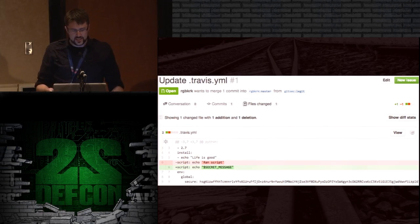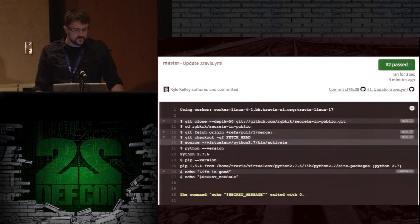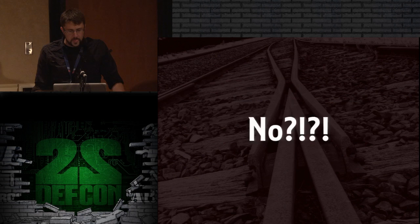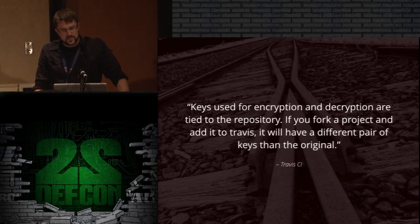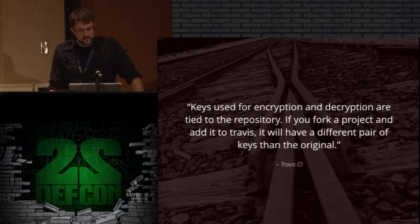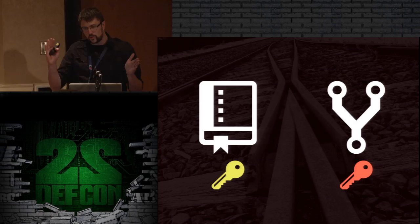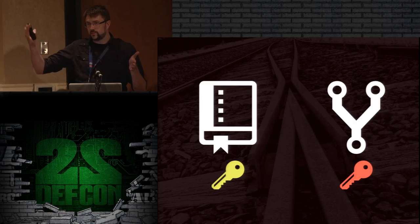Let's say we open a pull request and try to echo out their environment variable — nothing. Travis says: the keys used for encryption and decryption are tied to the repository. If you fork a project and add it to Travis, it will have a different pair of keys than the original. So if you make a repo it gets one key; if somebody forks your repo, they get a totally separate key. They can run their own secret stuff off their fork, but only stuff on master is tested with the original keys.